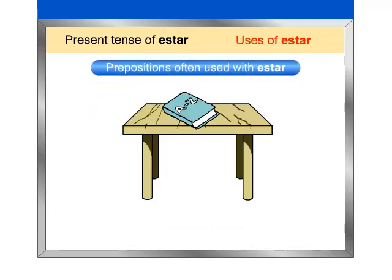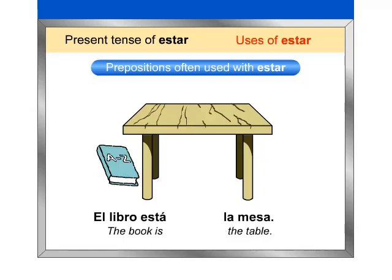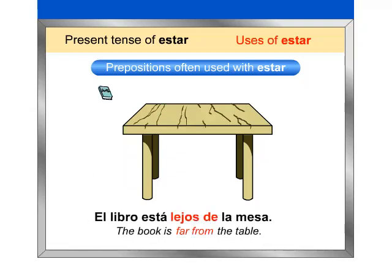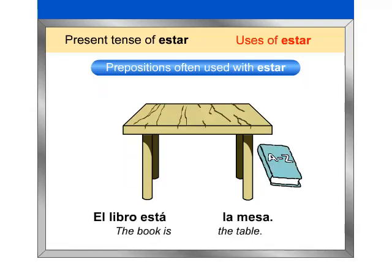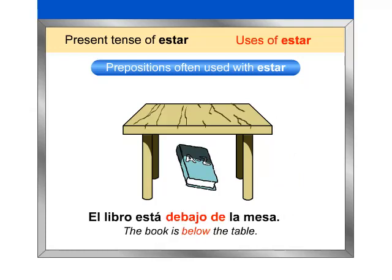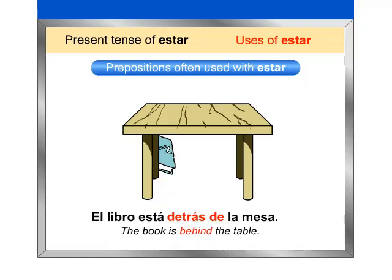Pay attention to the location of the book and repeat the prepositions after me. El libro está sobre la mesa. El libro está al lado de la mesa. El libro está lejos de la mesa. El libro está a la derecha de la mesa. El libro está debajo de la mesa. El libro está delante de la mesa. El libro está detrás de la mesa. Remember, these are just a few examples of prepositions of location.